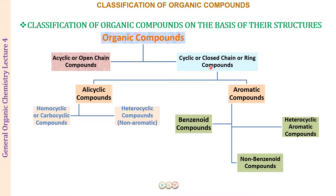We have a further classification of the cyclic compounds into alicyclic and aromatic compounds. Alicyclic further into homocyclic or carbocyclic compounds and heterocyclic compounds. And next, the aromatic compounds further into benzenoid, non-benzenoid, and the heterocyclic aromatic compounds.